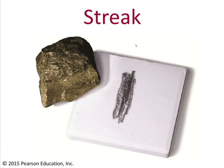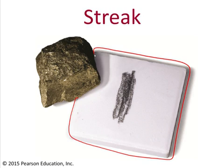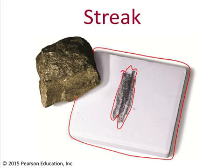Another technique that you'll be using this week in lab is streak. You're going to have a little square piece of porcelain which is called a streak plate. What you're going to do is rub your mineral specimen against that streak plate — it will leave behind a powdered form of the mineral. And the color of that powdered form of the mineral is diagnostic for figuring out which mineral it is. In this case, you've got a mineral with a distinctive golden metallic luster, but it leaves behind a blackish streak on the streak plate. What's curious here is that the streak color is actually far more reliable than the color of the mineral specimen itself.